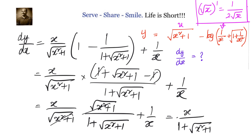So, if y equals square root of x squared plus 1 minus log of 1 by x plus square root of 1 plus 1 by x squared, then dy by dx equals x divided by 1 plus square root of x squared plus 1, plus 1 by x.